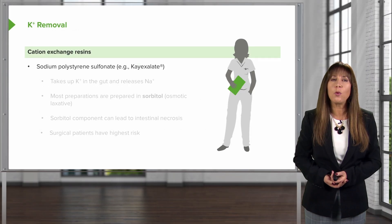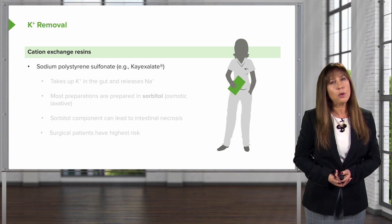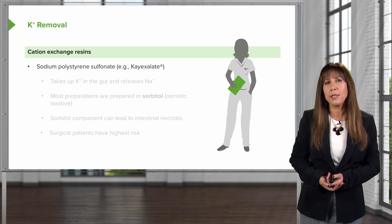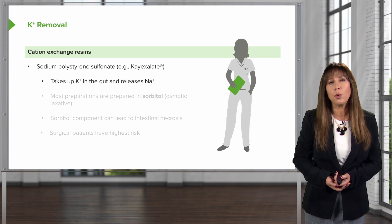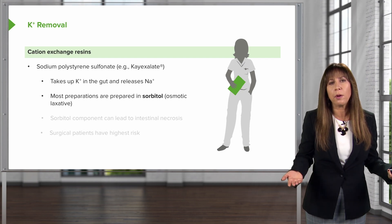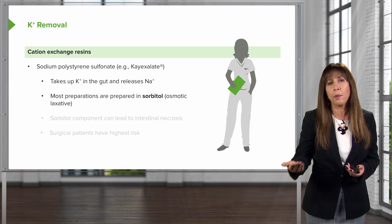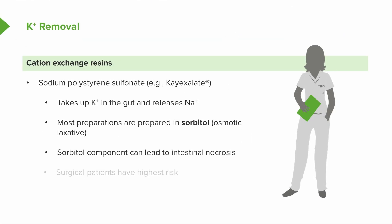Another mechanism for potassium removal includes cation exchange resins. This includes sodium polystyrene sulfonate, otherwise known as K-exalate. This is an exchange resin that takes up potassium in the gut and releases sodium. Most preparations are made using sorbitol, which is an osmotic laxative that also aids potassium excretion. However, the sorbitol component can lead to intestinal necrosis, so we have to be very careful, particularly in surgical patients who are at highest risk.